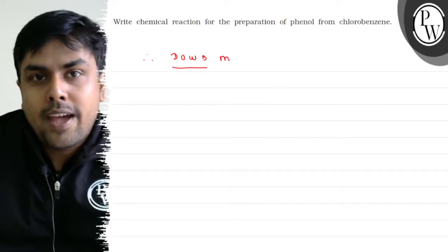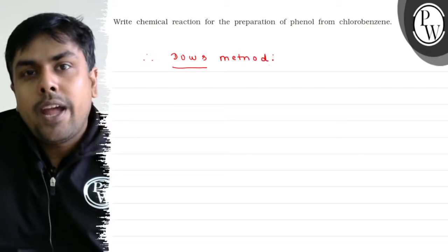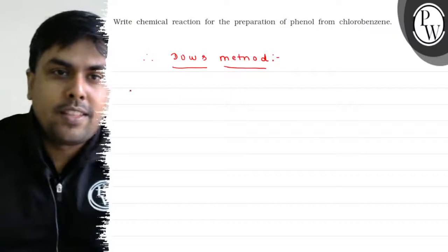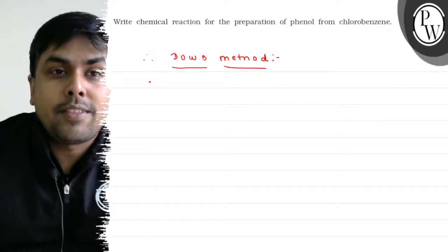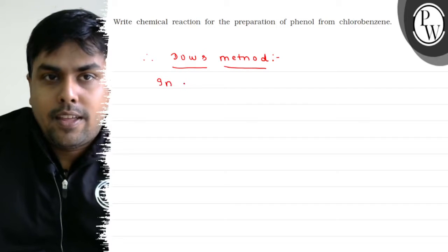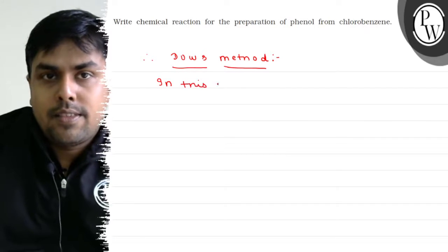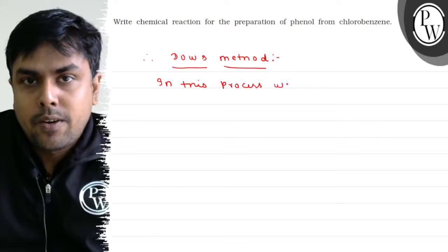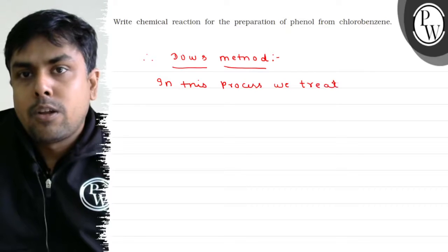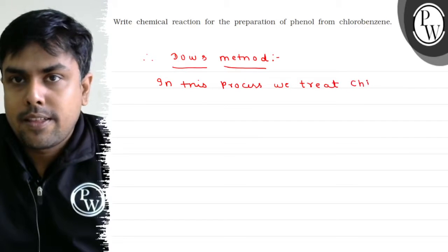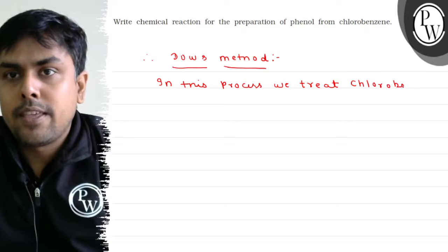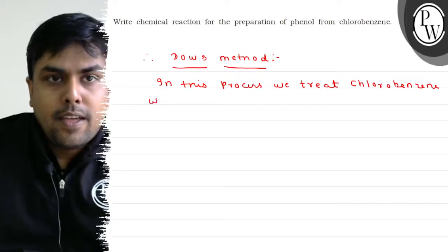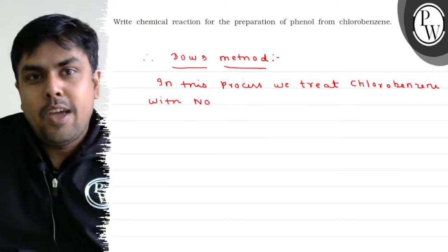What is happening? Basically, if I talk about industrial method of preparation of phenol from chlorobenzene, what do we do in this process? In this process we treat chlorobenzene, chlorobenzene with NaOH.